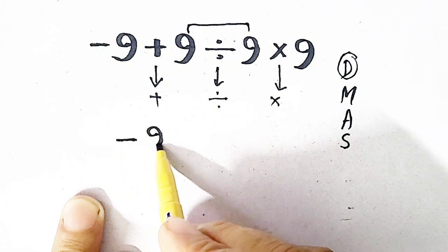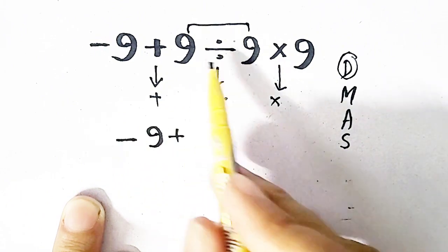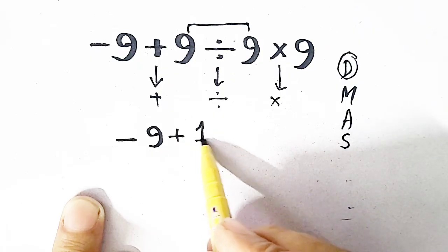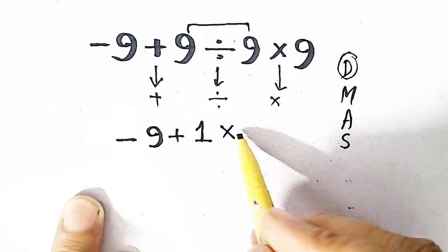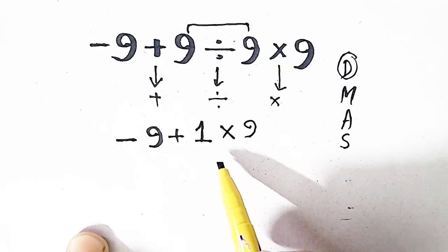So we will get minus 9 plus 9 divided by 9 will be equal to 1, and times 9 as it is.